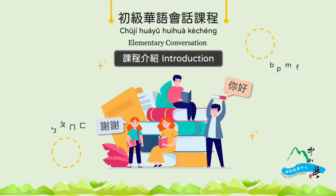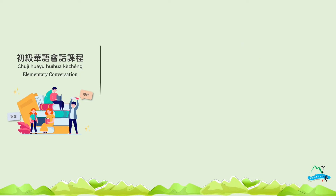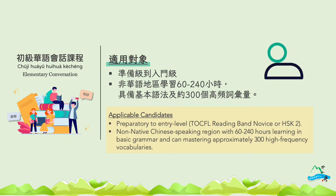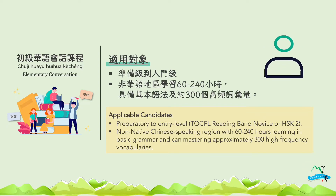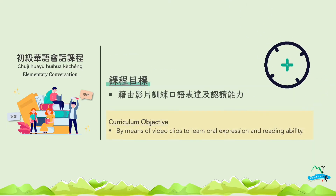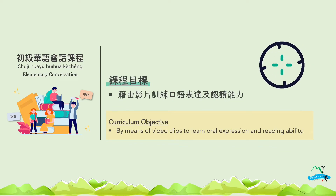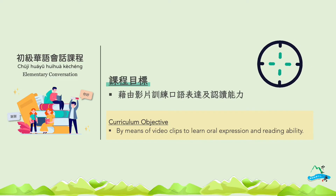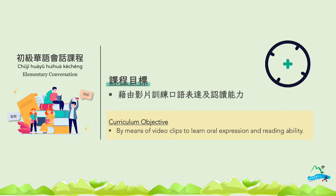初级华语绘画课程介绍 - Introduction of Elementary Conversation Course. 这套教材为准备集到入门集，已经具备基本语法和三百个高频词汇量的学生制作。This course is designed for students at the preparatory and entry level who have already learned basic grammar and mastered 300 high-frequency vocabulary words. 我们希望能借由这些教学影片来训练口语表达以及认读能力。We hope to enhance students' speaking and reading skills through these video clips.